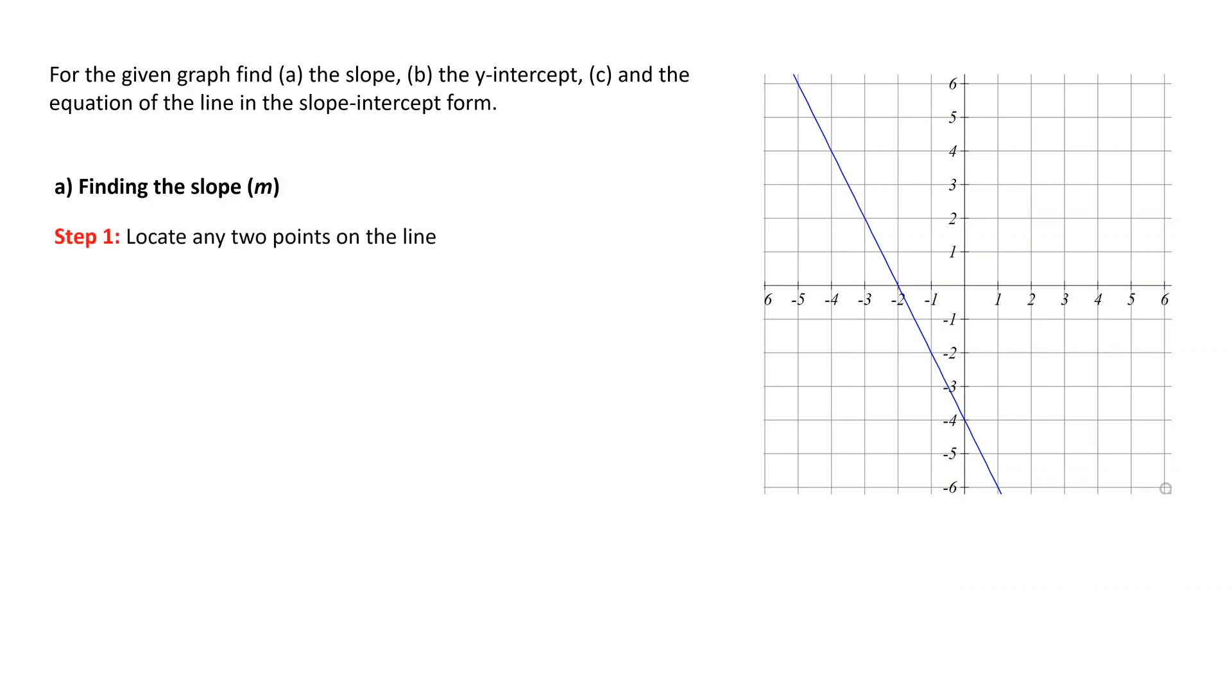In order to find the slope, we first need to locate two points on the line. To avoid dealing with partial units, we try to find the points that are exactly on the corner of the square units. In other words, we will find the points that are on the intersection of the horizontal and vertical grid lines.